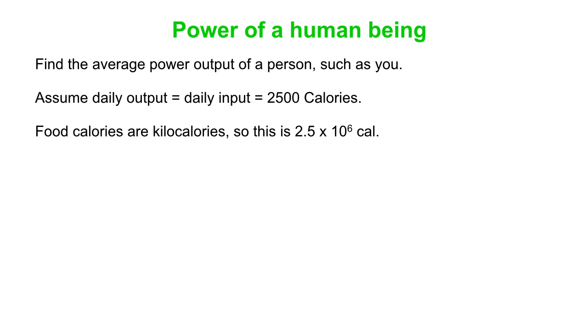Food calories, capital C calories, are actually kilocalories. So that's 2.5 times 10 to the 6 lowercase calories. A calorie is 4.186 joules. So that turns out to be 1 times 10 to the 7 joules.